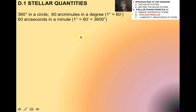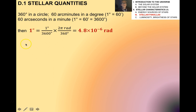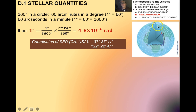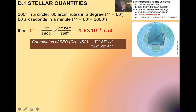There are 360 degrees in a circle, 60 arc minutes in a degree, and 60 arc seconds in a minute. One arc second would be 4.8 times 10 to the minus 6 radians. This system of degrees, minutes, and seconds is also used in geography for latitude and longitude. For example, San Francisco is located at 37 degrees north, 37 minutes, 11 seconds — and that's 122 degrees, 22 minutes, 47 seconds west.